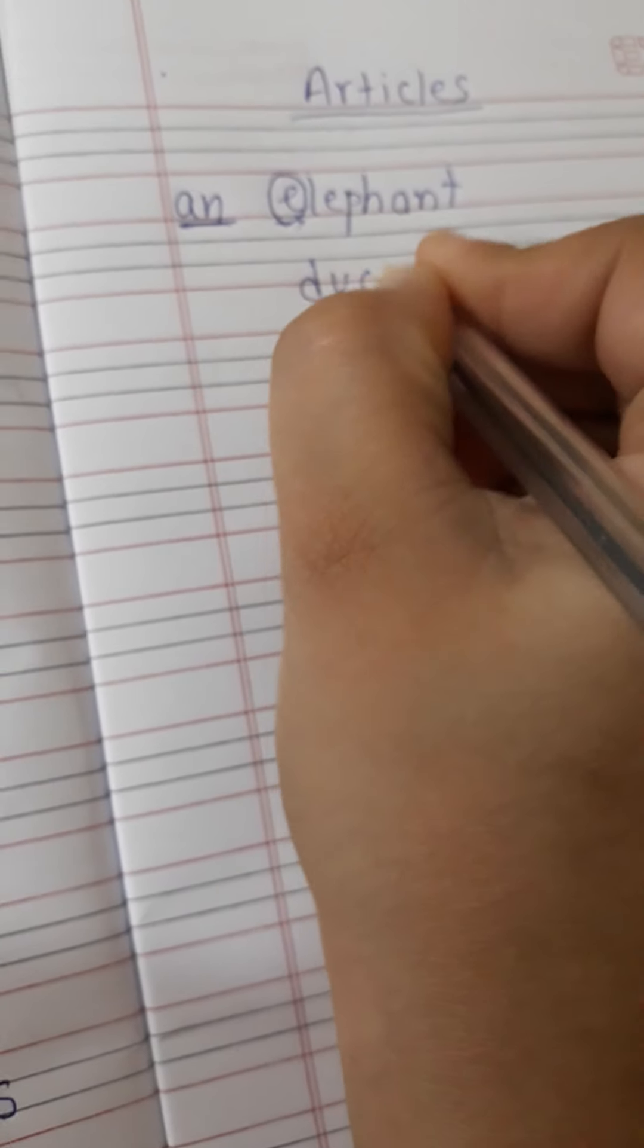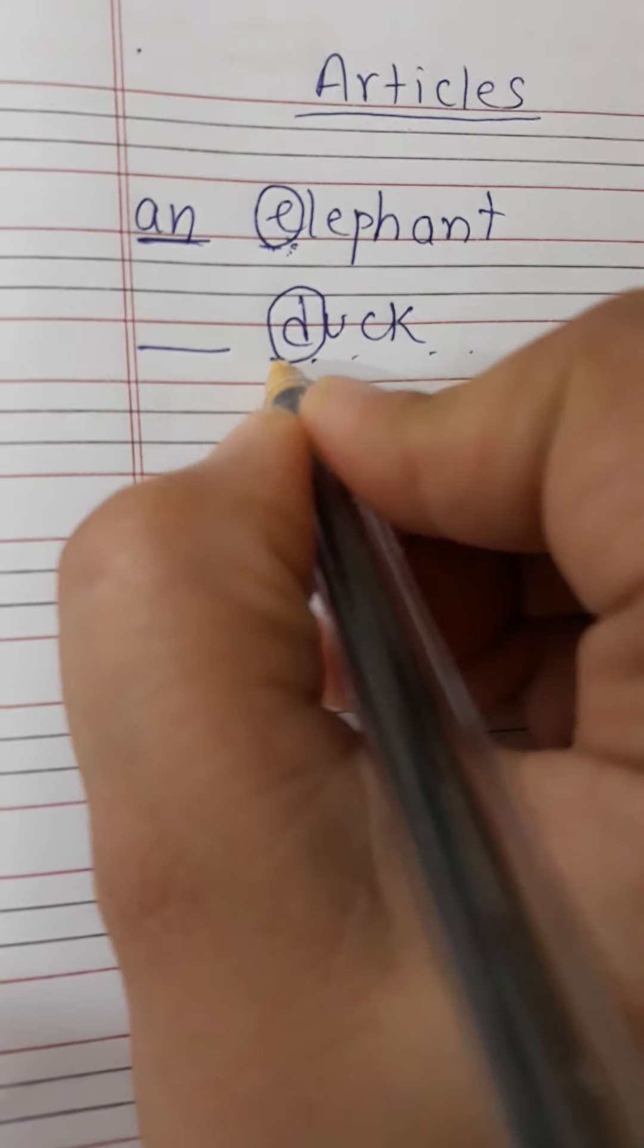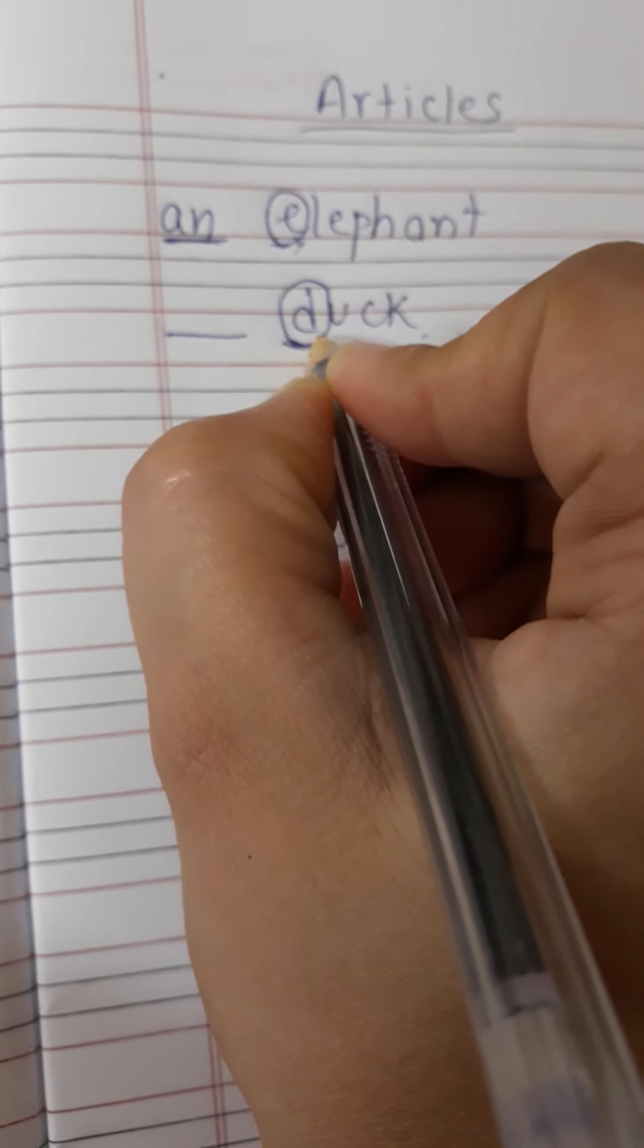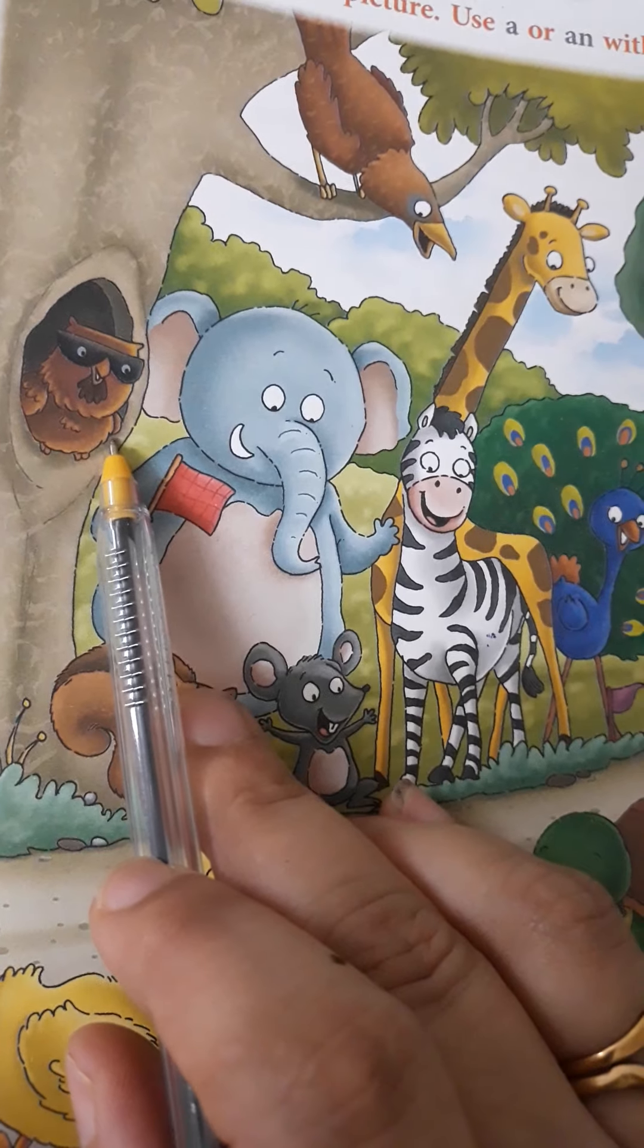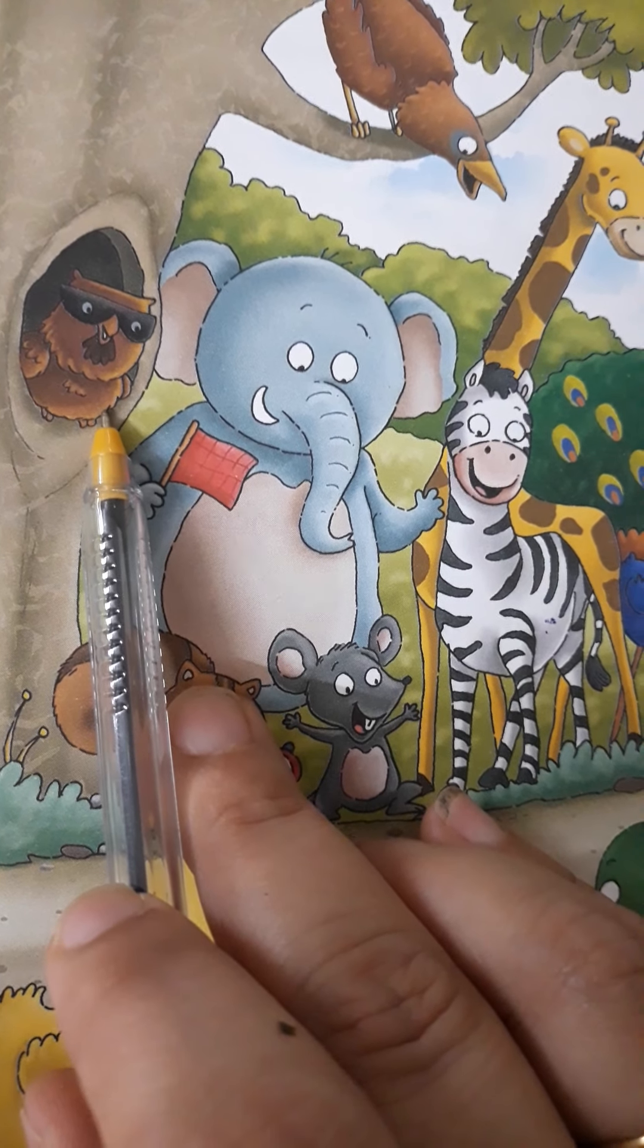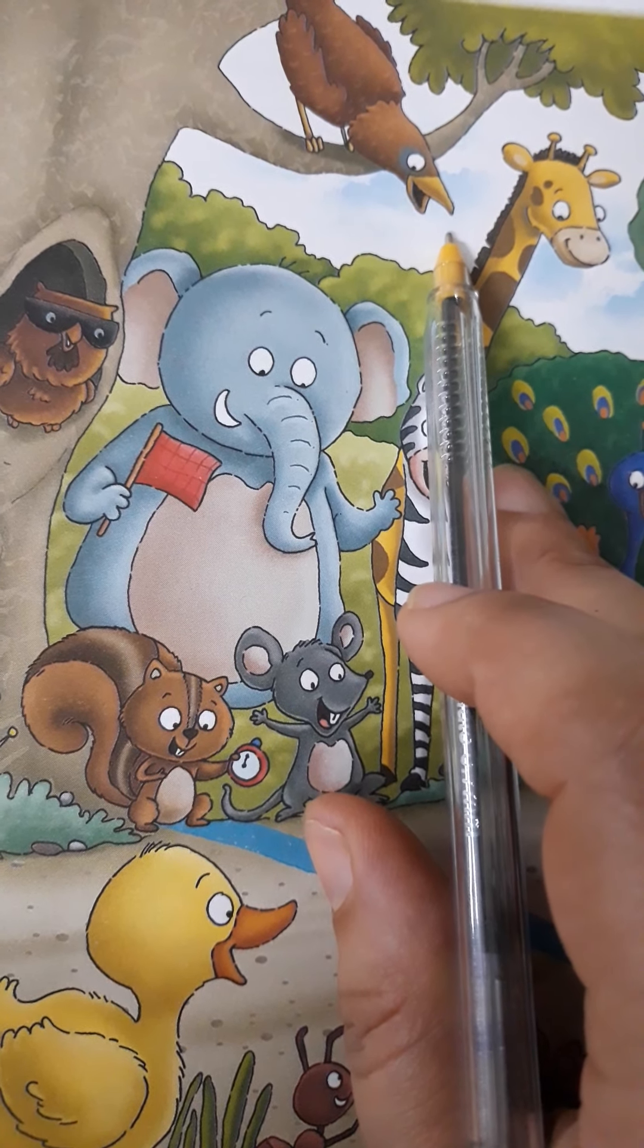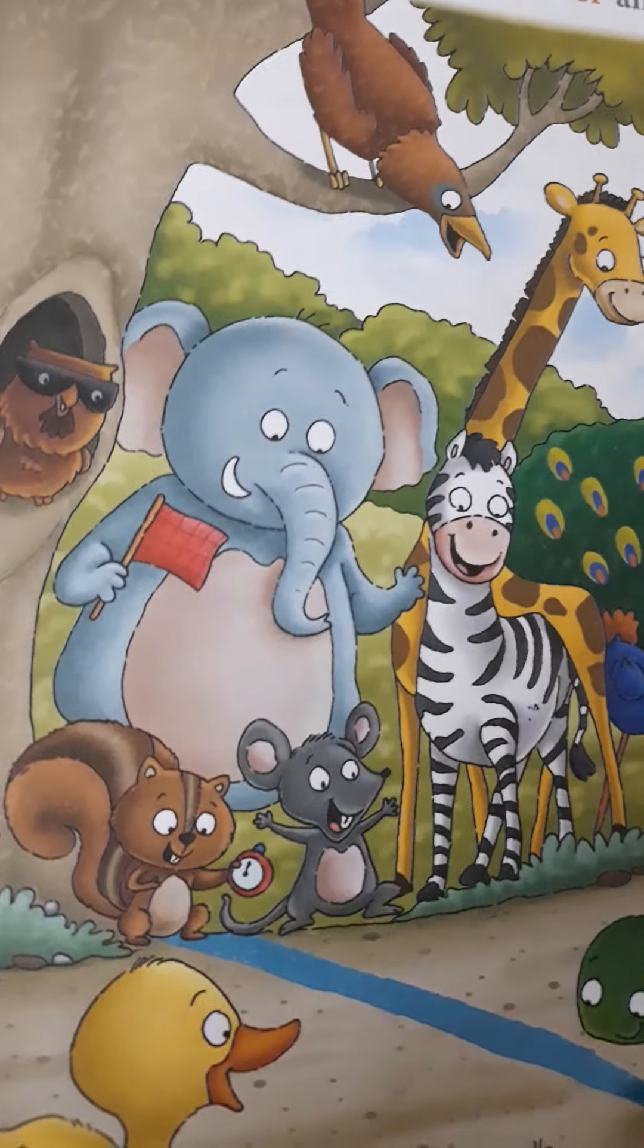Now, you can see here a duck. D, U, C, K. Duck. Duck starts with D. It starts with D. It is singular also. And it's starting with D. So, D is a vowel or consonant. Sing the song. Do you find D in that song? A, E, I, O, U. No. So, it's D. So, here we are going to write A. A duck. An elephant. Okay? Let's quickly see the picture again. Owl. How do we spell owl? O, W, L, owl. It starts with O. So, here we are going to write AN. O is a vowel. Crow. Crow starts with C. C is a consonant. So, we will write A. Giraffe starts with G. G is a consonant. We will write A. Got it?